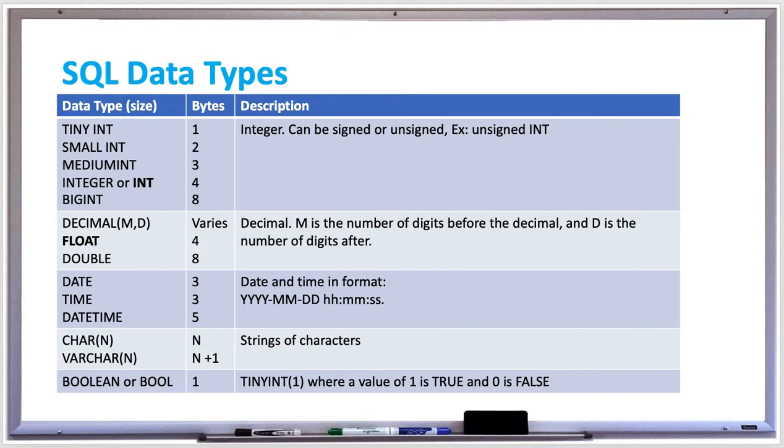There's also DATE, TIME, and DATETIME for specifying the date and time or both in your database. For character strings, there's CHAR and VARCHAR, and VARCHAR is most commonly used for strings. And BOOL and BOOLEAN, as I mentioned, are just synonyms for TINYINT(1), where a value of 1 means true and 0 means false.